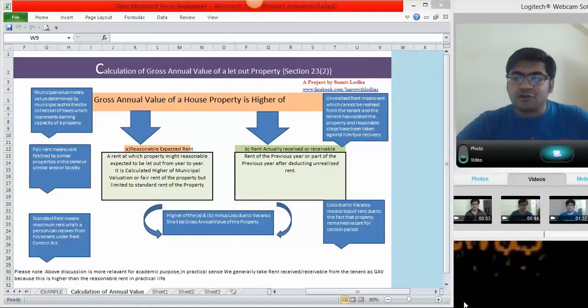On annual basis from a property is called reasonable expected rent. Then how to calculate this? There is a simple calculation to do this. It is calculated higher of municipal valuation and fair rent but subject to or maximum to the standard rent.